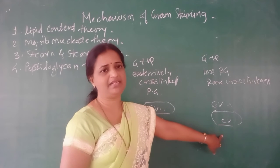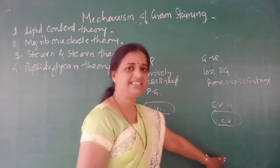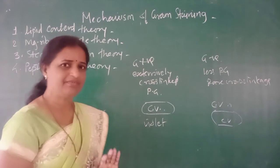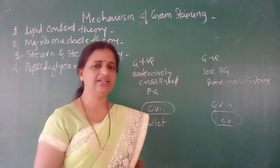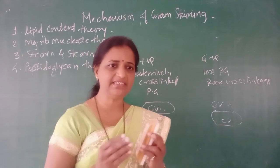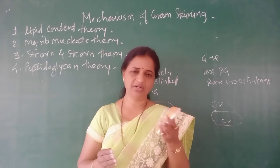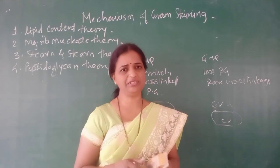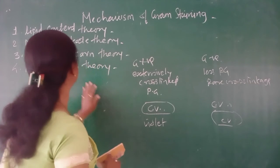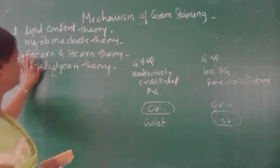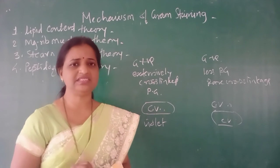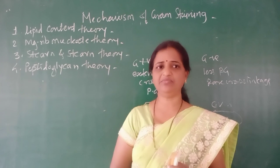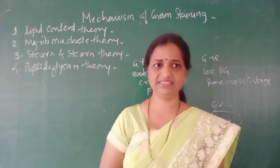In Gram negative bacteria, they become violet initially but lose the color when you apply 95% ethyl alcohol, and finally take the color of the last stain — safranin — and appear pink. So these are the four mechanisms explaining Gram staining: lipid content theory, magnesium ribonucleate theory, Stern and Stern theory, and peptidoglycan theory. Stay tuned for the next example of differential staining. Thank you.